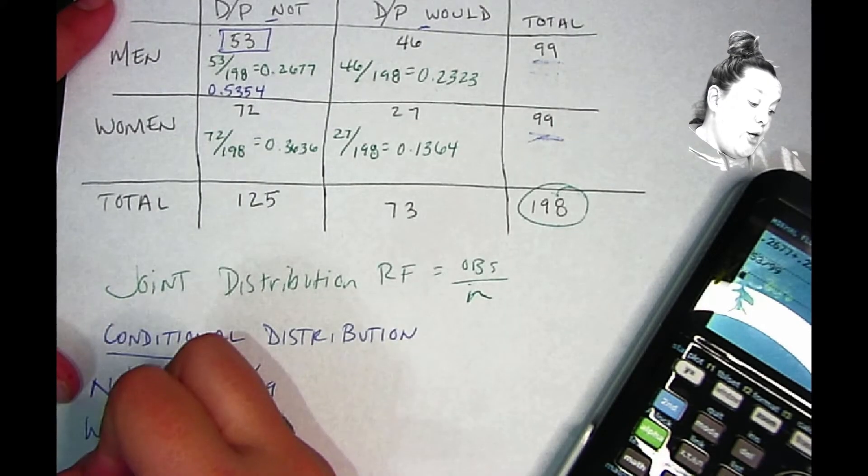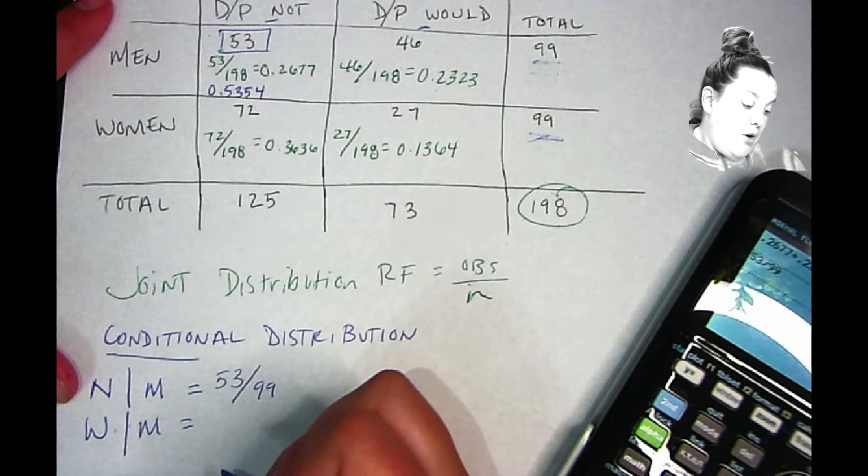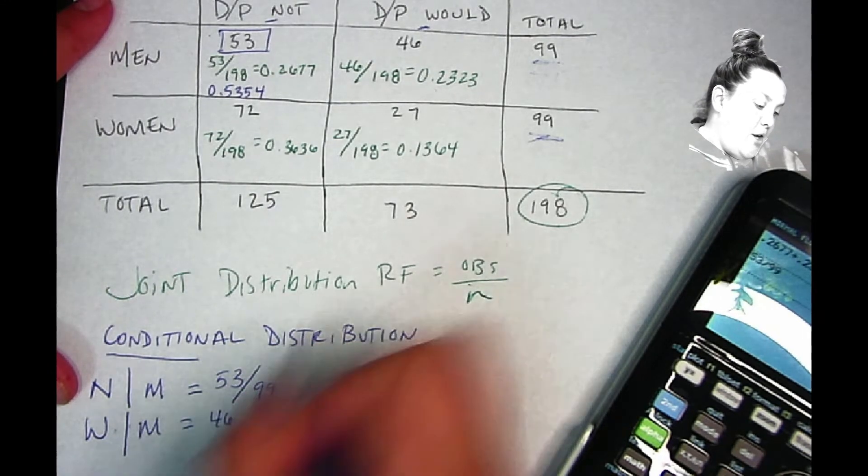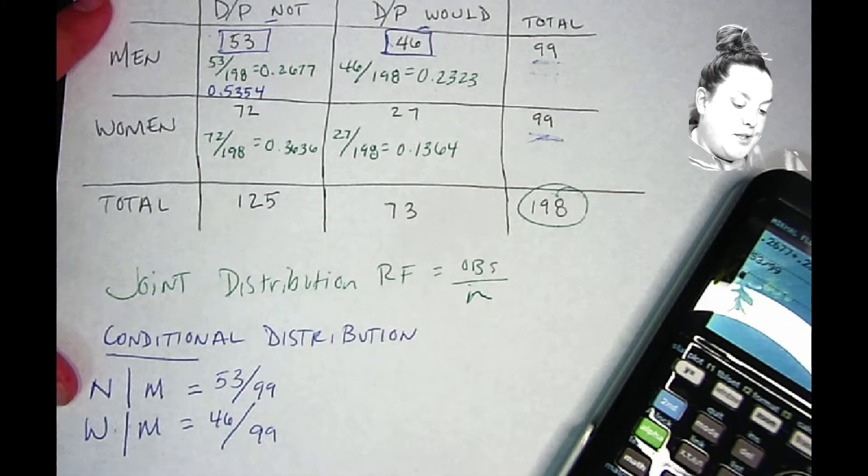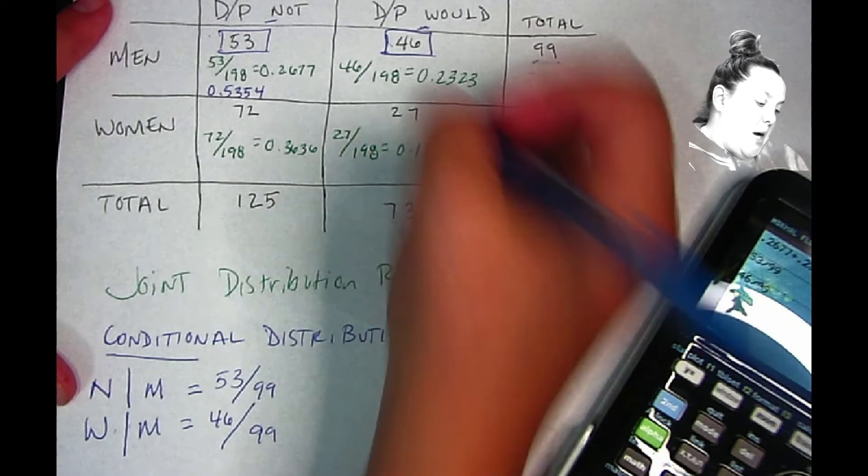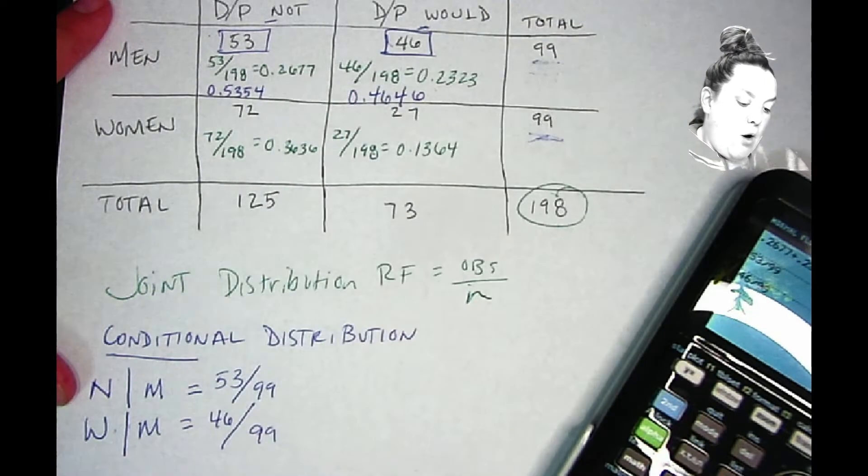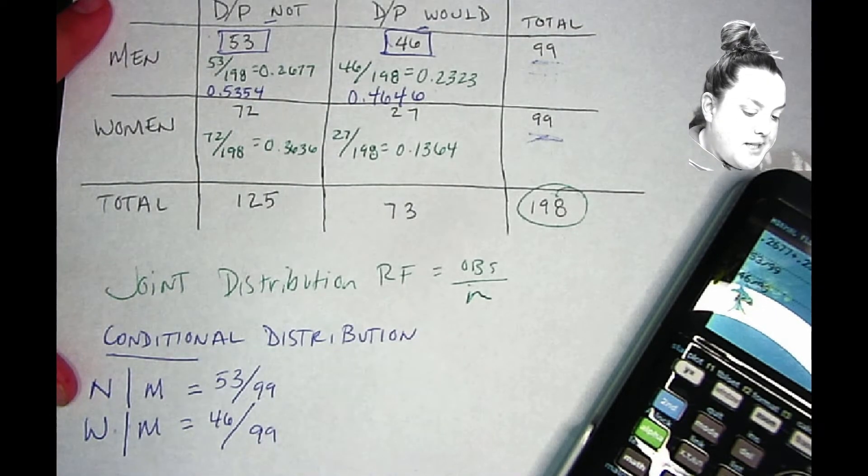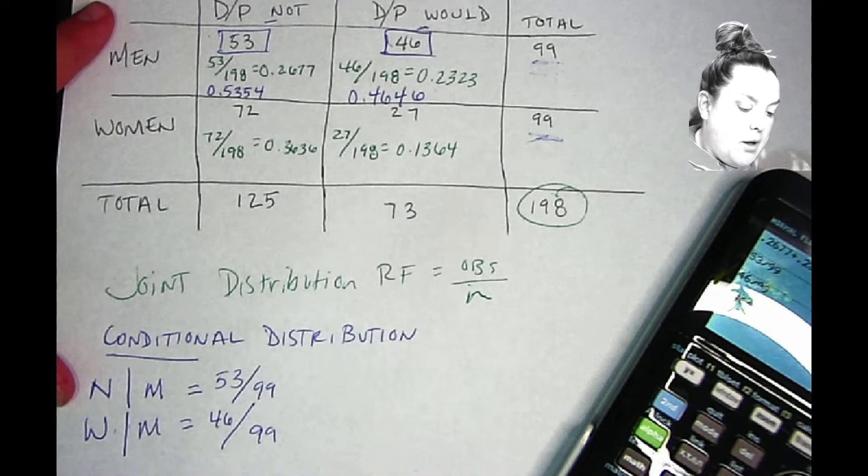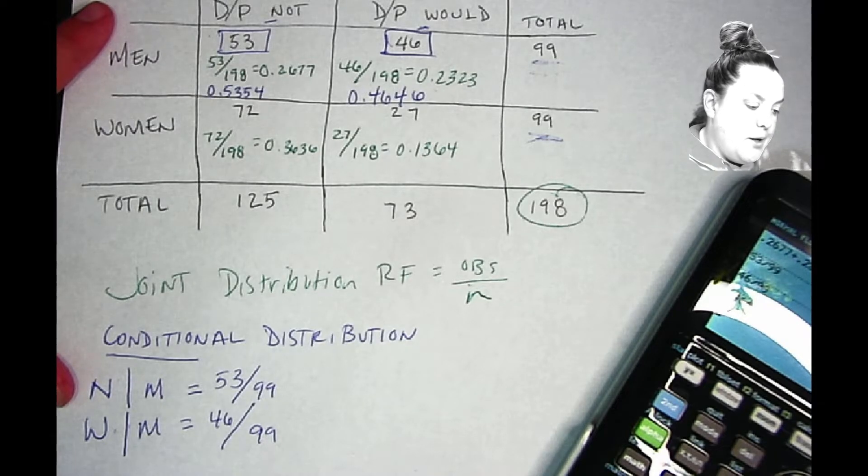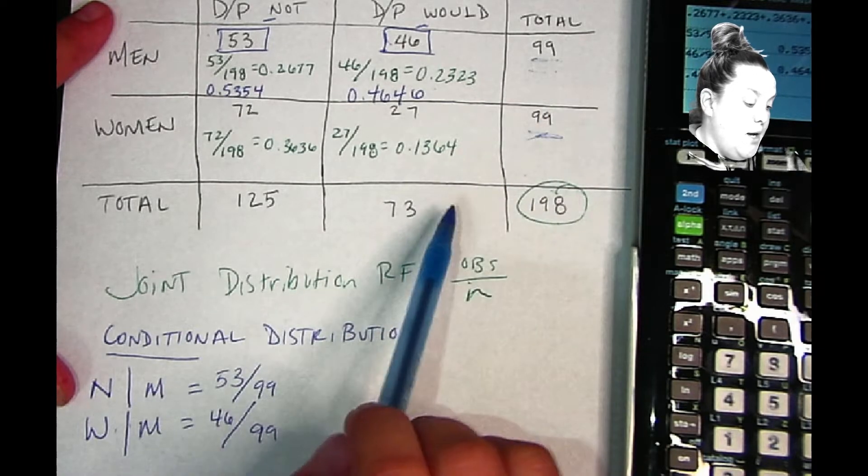Then we'll have would ride in a driverless passenger vehicle given that they're male. So I still use the 46, I still use that observed count, but again this time I use the 99. So 46 divided by 99, and that comes out to be 0.4646. Now because this is all one row, these two cells should add up to one, and you can see that that's true.